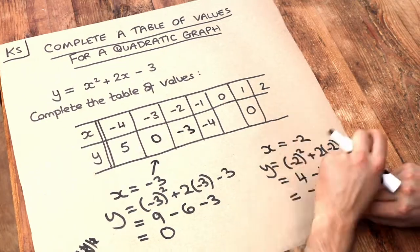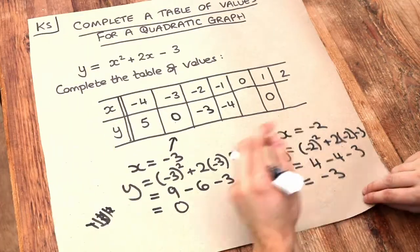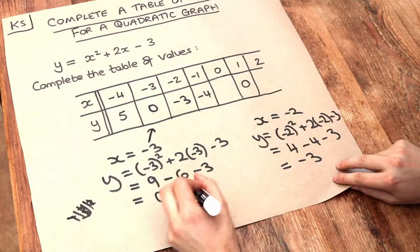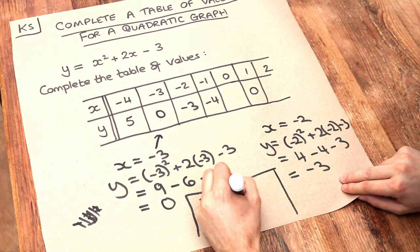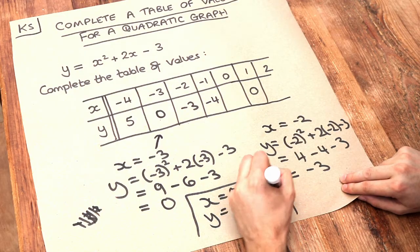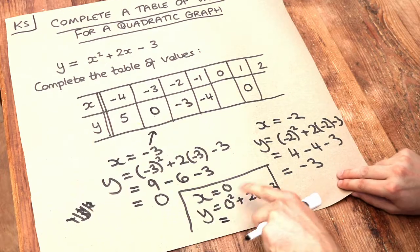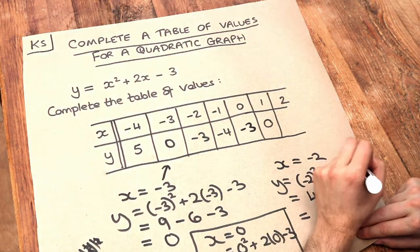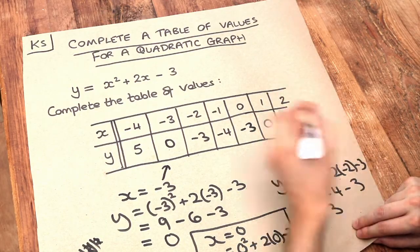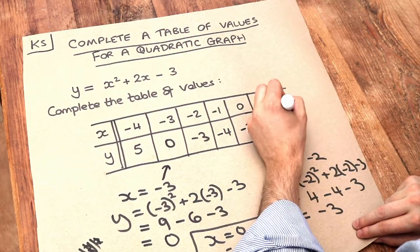We've got two values left, and these are easier because they're positive or zero. If x equals 0, we get y equals 0 squared plus 2 times 0 minus 3. That's 0 plus 0 minus 3, which is minus 3. Finally, if we substitute 2 in the same way, we get 5.